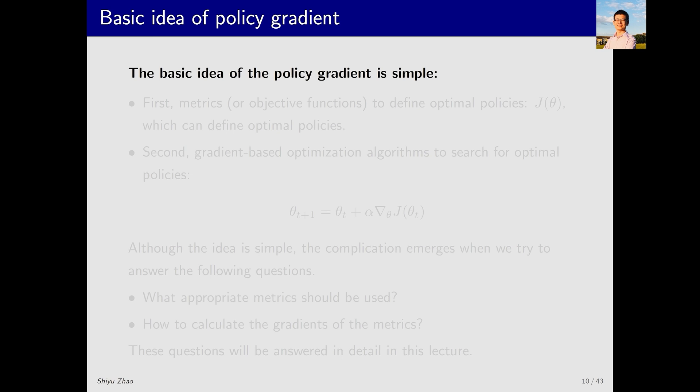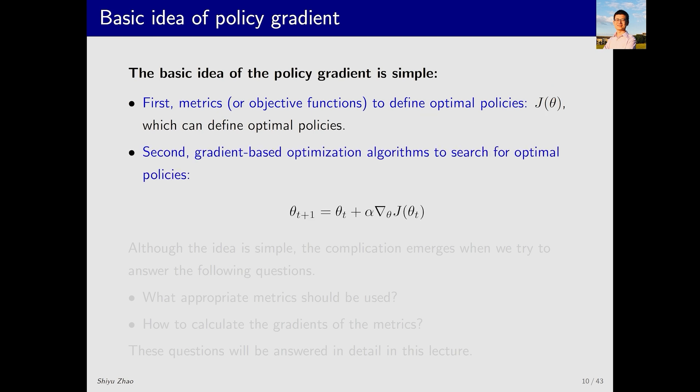Now let's see the basic idea behind policy gradient methods. First, we need an objective function to define what the optimal policy is. Here we use J(θ) as the objective function. What exactly this function is will be explained in detail later. The parameter θ corresponds to the policy. Different policies represented by different values of θ will result in different values of J(θ). Our goal is to maximize J(θ). The optimal θ, denoted as θ*, should satisfy θ* = argmax J(θ). Once we have the objective function, we can optimize it. The simplest optimization algorithm is based on gradients, which is the following update rule: θ_{t+1} = θ_t + α∇J(θ_t). So the overall approach is quite straightforward.